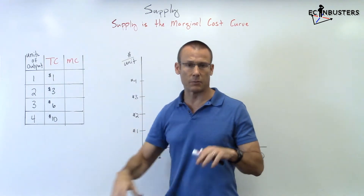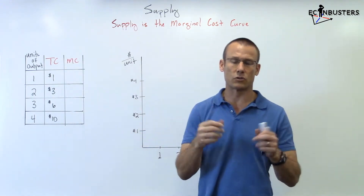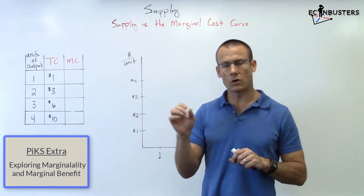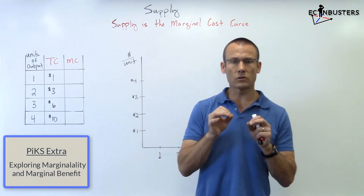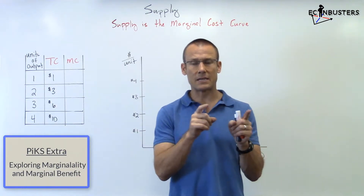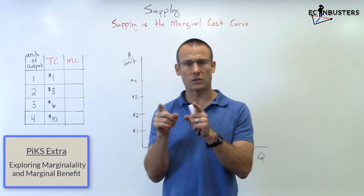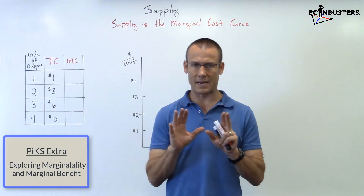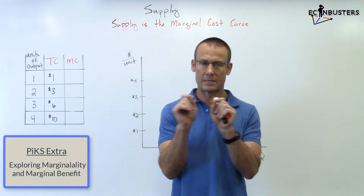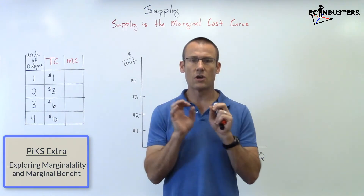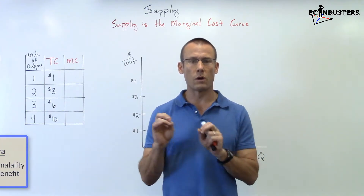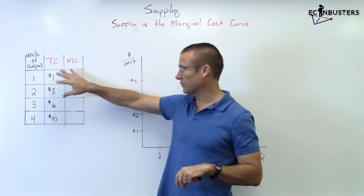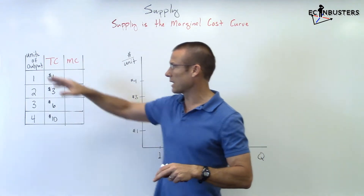Before I get into this table, let me define marginal cost. What is marginal cost? Marginal cost is the additional cost of producing one more good. It's that simple — the additional cost of producing one more good. Now let's go to this table.